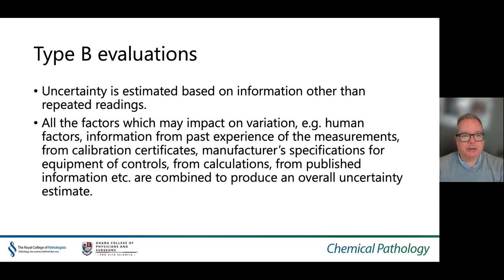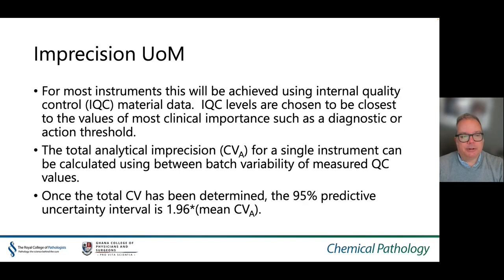This is in contrast to Type B evaluations, whereby uncertainty is estimated based on information rather than repeated readings. All factors which may impact variation — for example, human factors, information from past experience, or from calibration certificates — are combined to produce an overall uncertainty measurement. When determining imprecision uncertainty, this can be achieved using internal quality control material. IQC levels are chosen to be closest to values of most clinical importance such as diagnostic or action thresholds. Total analytical imprecision CVA for a single instrument can be calculated using the between-batch variability of a measured QC value. Once total CVA is determined, the 95% predictive uncertainty interval is 1.96 times the mean CVA.